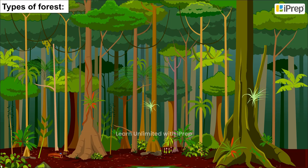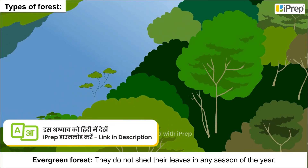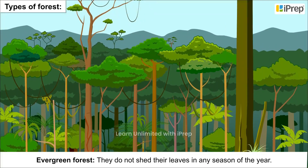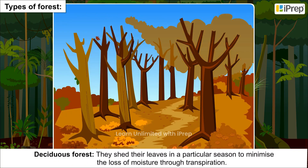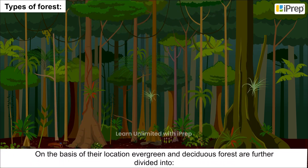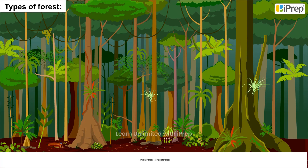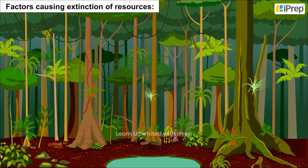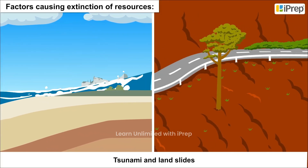Types of forest depending on when they shed their leaves: Evergreen forests do not shed their leaves in any season of the year. Deciduous forests shed their leaves in a particular season to minimize loss of moisture through transpiration. On the basis of their location, evergreen and deciduous forests are further divided into tropical forest and temperate forest.